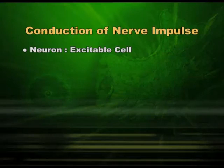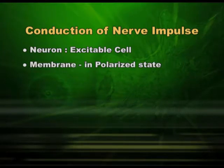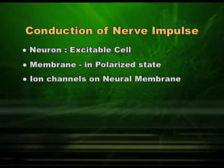To understand this, we have to understand the nerve cell once again. One thing is very clear: the neuron is an excitable cell. You can excite it and that is how the stimulus will be conducted — that is how nerve conduction will take place. The membrane of the nerve cell is in a polarized state because it has ion channels, meaning ions can pass through these channels. The presence of ion channels is important in the nerve cell, which keeps it polarized.